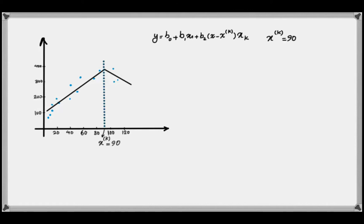The general form of the equation for a piecewise linear regression model is: y equals beta-zero plus beta-one times x-one, plus beta-two multiplied by (x minus knot value) multiplied by dummy knot. The knot value is our breaking point — note that k is not an exponent to x but an upper index, shown within parentheses. In this case the knot value is 90, meaning we divide our dataset at x equals 90 into two parts and develop a linear regression model for the points before and after 90, connected at x equals 90.